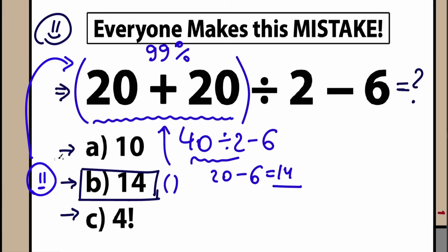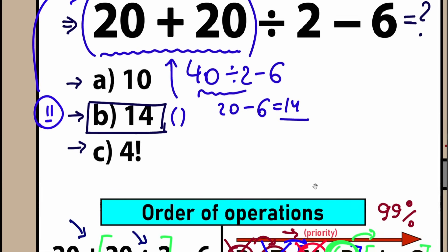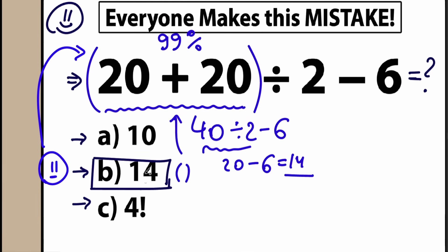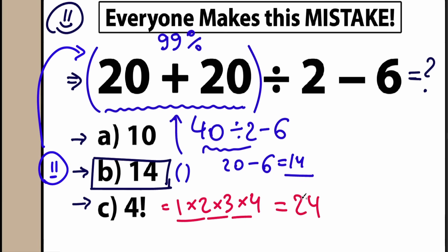The correct answer to our question is 24, but on the test that option appears as 4 factorial. 4 factorial equals 1 times 2 times 3 times 4: that's 2 times 3 equals 6, and 6 times 4 equals 24. So 4 factorial equals 24. When you choose 4 factorial as the answer, you should be proud of yourself — you solved the question absolutely correctly. The correct answer is 4 factorial, not 14, not 10.